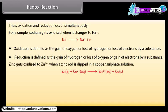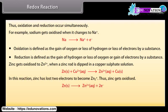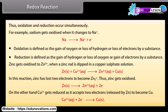Zinc gets oxidized to Zn2+ when a zinc rod is dipped in a copper sulfate solution. In this reaction, zinc has lost two electrons to become Zn2+, thus zinc gets oxidized. On the other hand, Cu2+ gets reduced as it accepts two electrons released by Zn2+ to become Cu.